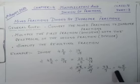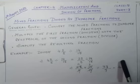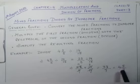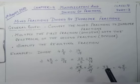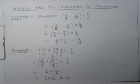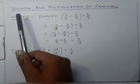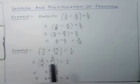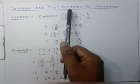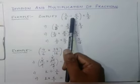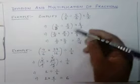The answer is 11 × 3 = 33 upon 7. Or we can write it in mixed fraction form: 7 goes into 33 four times (28), remainder 5, so it is 4 5/7. I hope this much is clear to everyone. Let us come to another topic: division and multiplication of fractions.